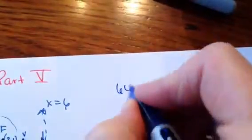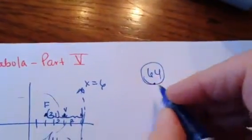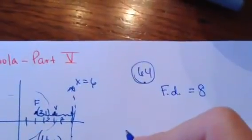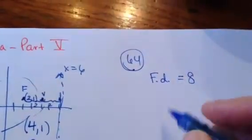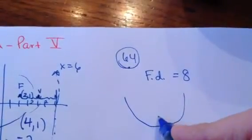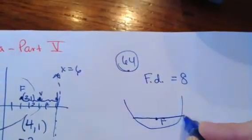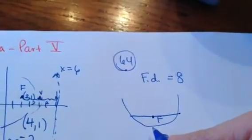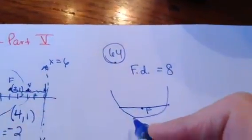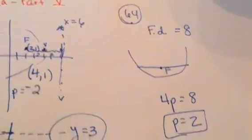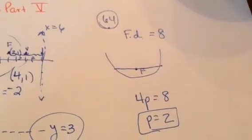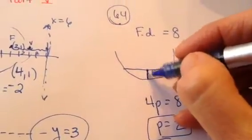Now 64 is actually even easier. 64 tells me the focal diameter is 8. It asks what is the focal length. If the focal diameter is 8 — remember what that means? If this is your focus, the focal diameter is 8. The focal length is 2 units. You do 4p equals 8, so p equals 2. That would be it on number 64.